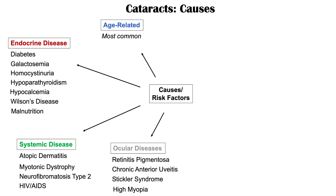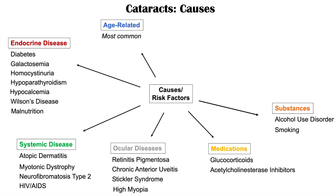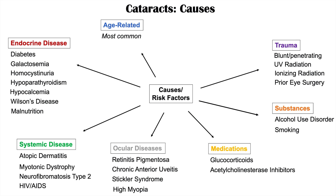Ocular diseases such as retinitis pigmentosa, chronic anterior uveitis, Stickler syndrome, or having high myopia can also increase your risk. Medications such as glucocorticoids and acetylcholinesterase inhibitors are another category. Substances also play a role — individuals with alcohol use disorder and individuals who smoke are both at increased risk for cataracts. Trauma is a significant category as well; blunt or penetrating trauma to the eye increases cataract risk, as does UV radiation and ionizing radiation.